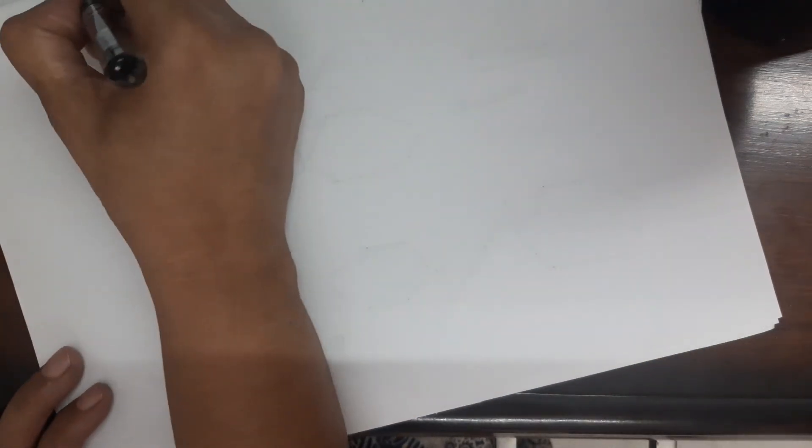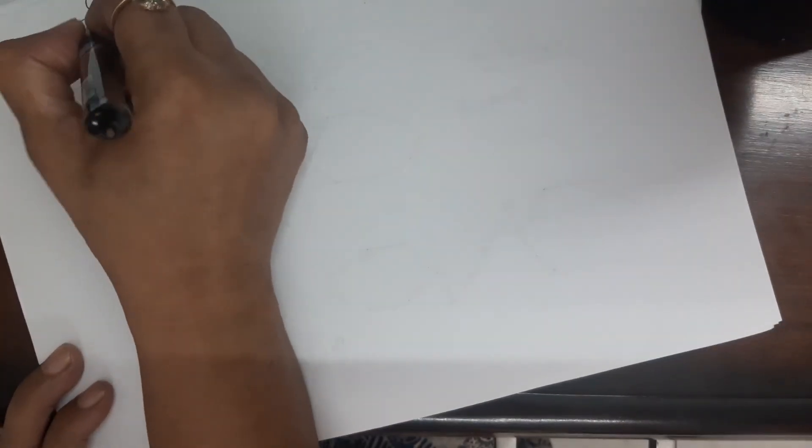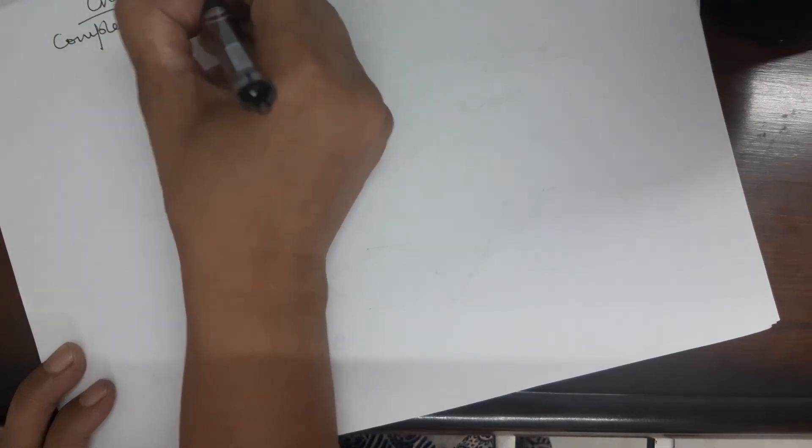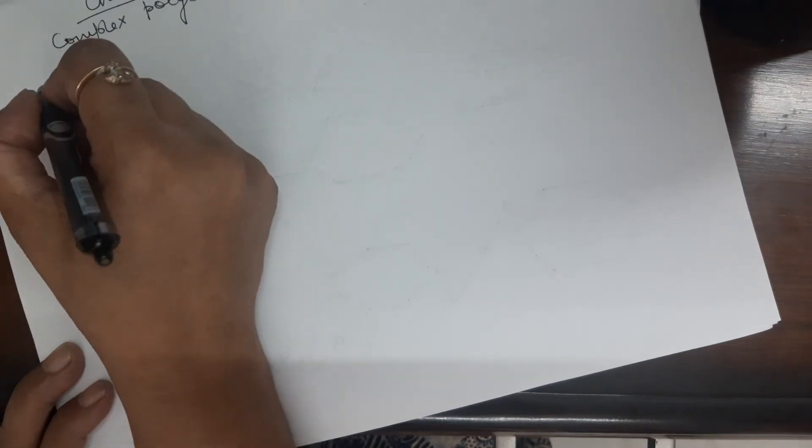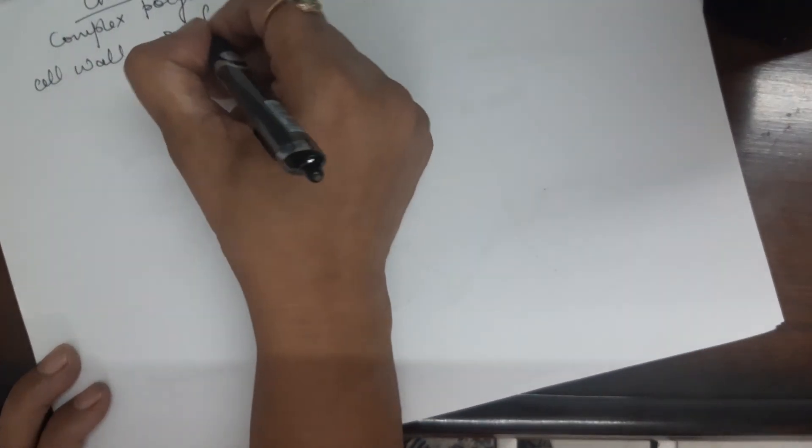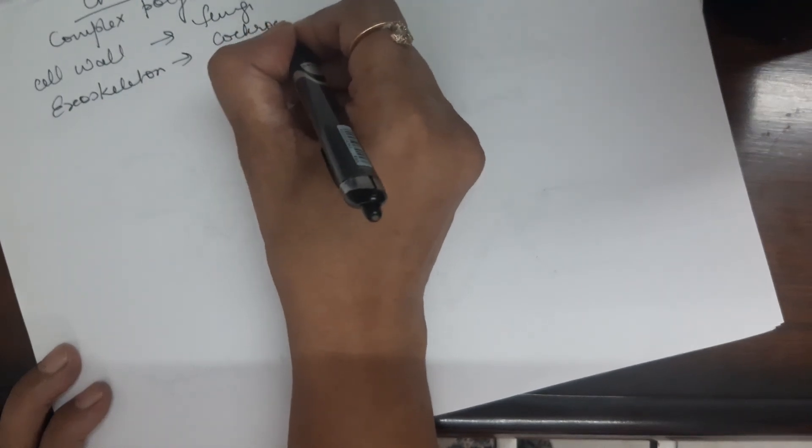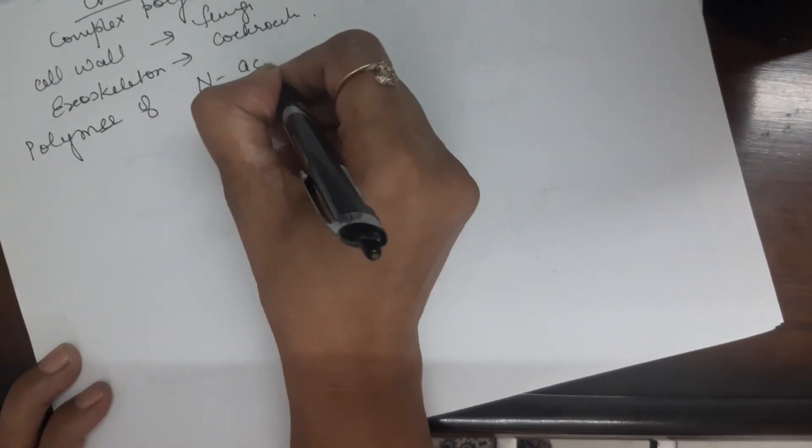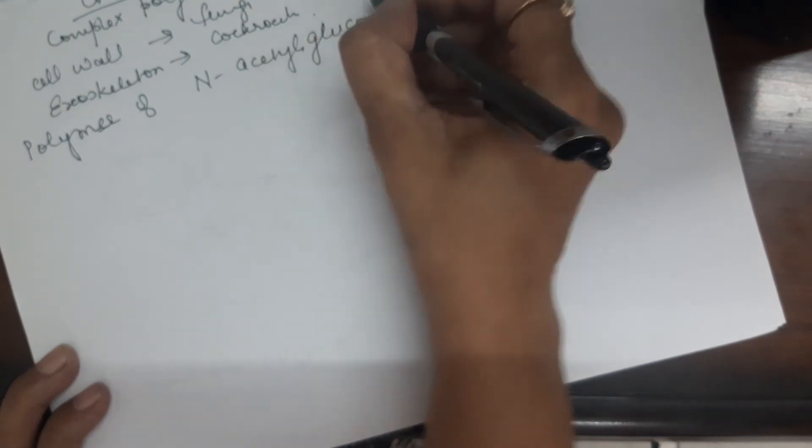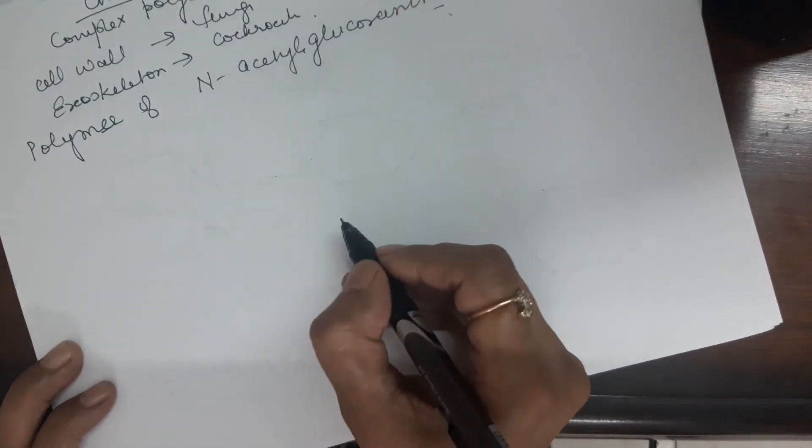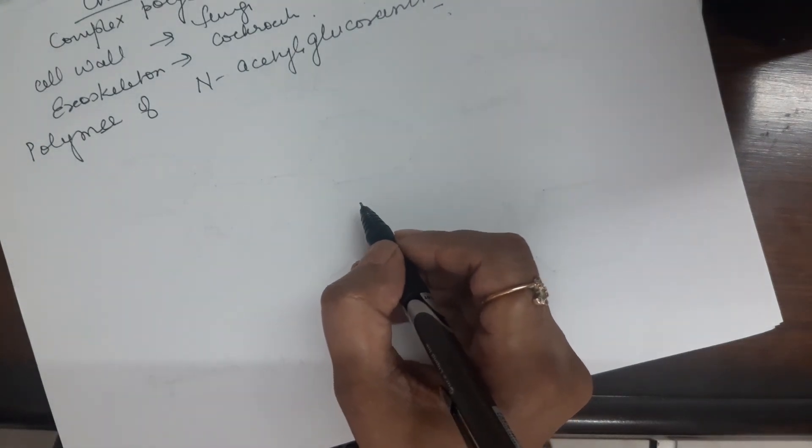Now, we move to heteropolysaccharide. And one such heteropolysaccharide is chitin. Also known as complex polysaccharide. This is called complex or heteropolysaccharide. And this is also found in exoskeleton of cockroach. Why is this called complex or heteropolysaccharide? Because this is a polymer of N-acetyl glucosamine. This is the reason that this is called a complex polysaccharide.